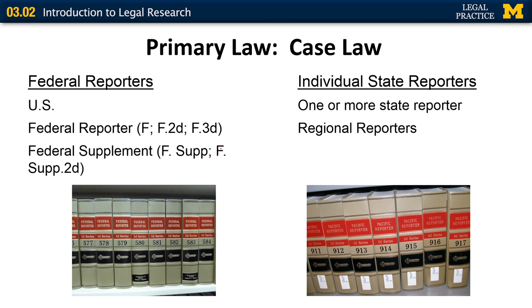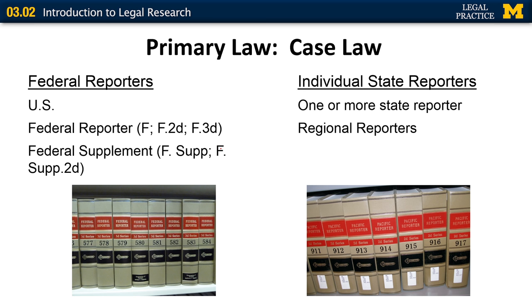The next primary law is case law, which is collected in reporters. Reporters are a roughly chronological collection of published cases by jurisdiction. On the federal side, there are three different reporters representing the three levels of courts: the US Reporter collects Supreme Court cases, the Federal Reporter collects all appellate court cases across all 12 appellate courts, and the Federal Supplement Reporter collects all published federal district court cases. Each state also has one or more state reporters, and state cases are also published in a regional reporter — for example, the Pacific Reporter collects cases from many of the western states.